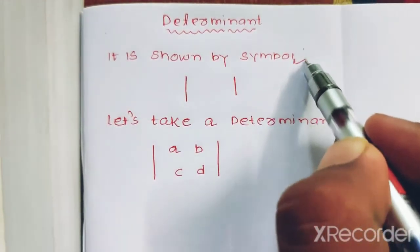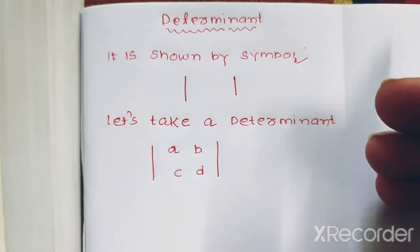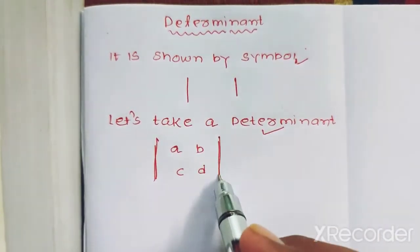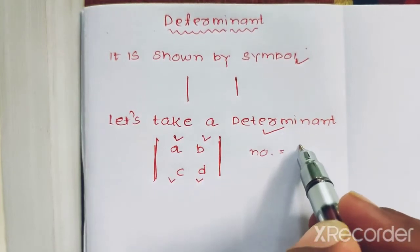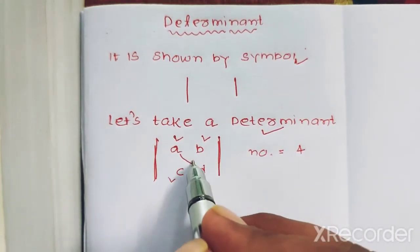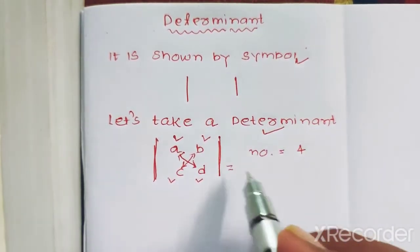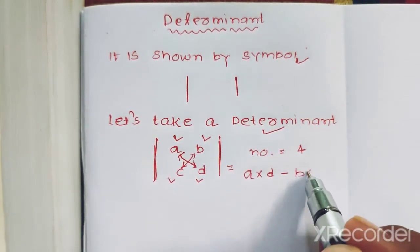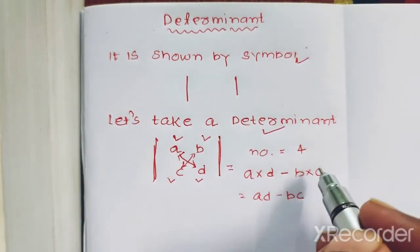We introduce the determinant symbol. For a 2x2 matrix with elements A, B, C, D, the number of elements is equal to 4, giving a total of 16 elements. We use cross-multiplication: we take A into D with the minus symbol and then B into C, giving the formula AD minus BC.